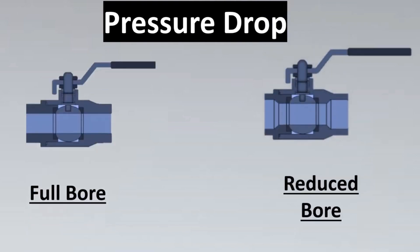The next consideration is pressure drop. Between full bore and reduced bore, the reduced bore valve will have a higher pressure drop because the bore size is smaller, causing some restriction to the fluid. This pressure drop is not high, but you still need to confirm with the process team that they are okay with such pressure drops throughout the system, or that they have compensated for them.